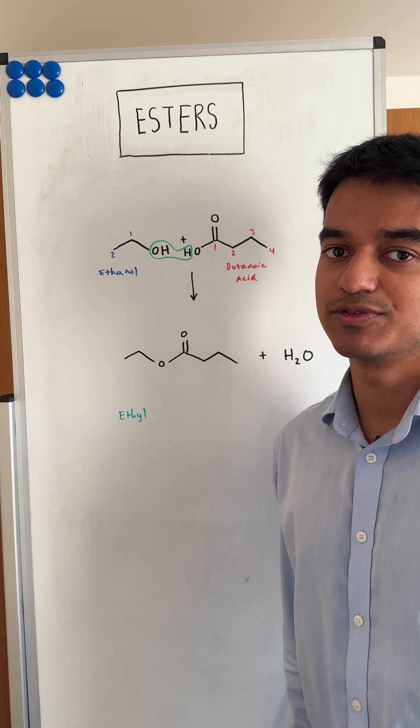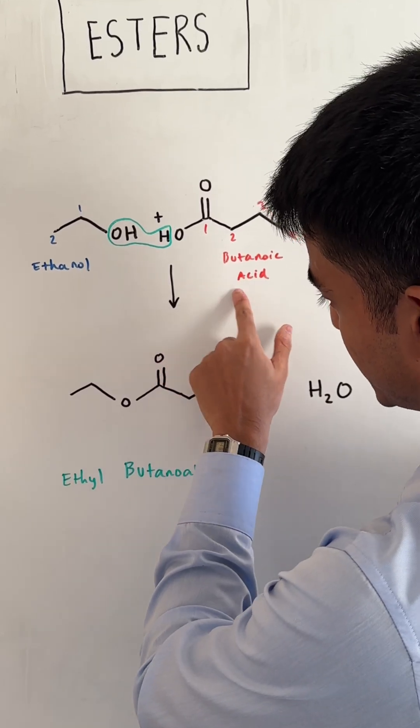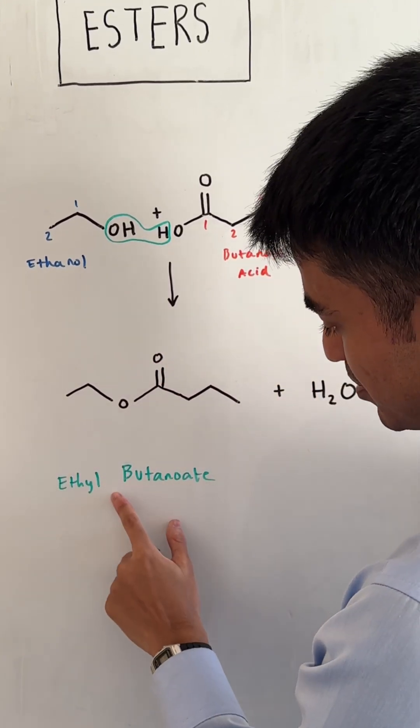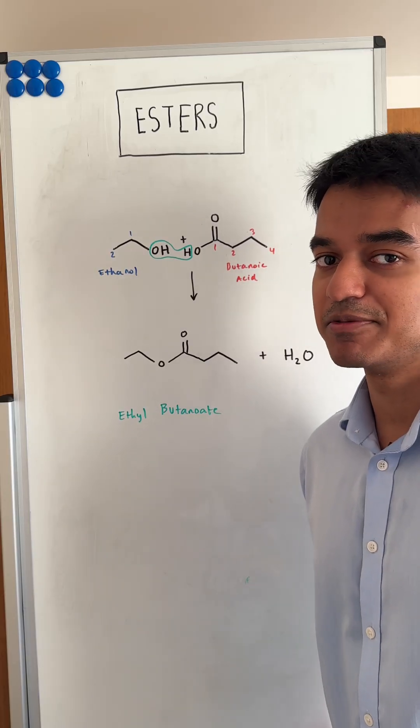The second part is always from the carboxylic acid. We started off with butanoic acid, so this becomes butanoate. So ethyl butanoate is the name of my ester.